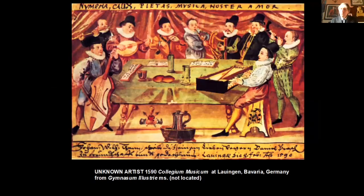On a smaller scale, the Collegium Musicum — the grouping of students at universities — dates back to the 16th century. We think of it much more with Bach, perhaps, in Leipzig in the 18th century, but these groups are already coming together. This is a rare early illustration of one of these groups. You can see the beer at the centre, so it's a convivial occasion — but serious music-making with a good range of instruments shown.